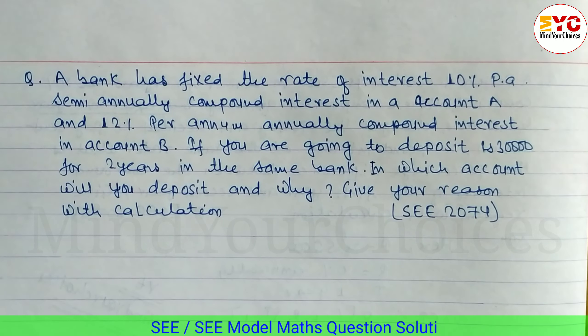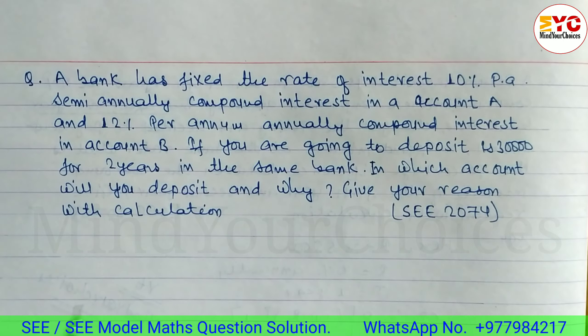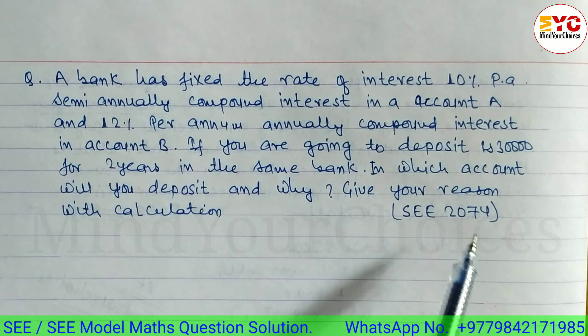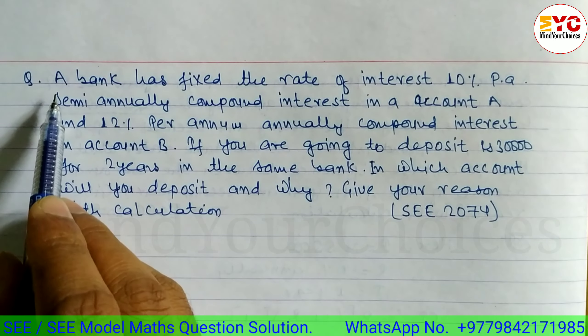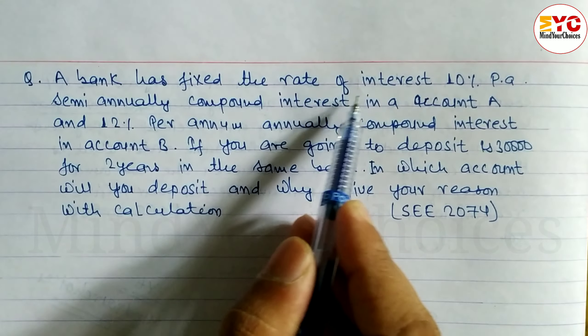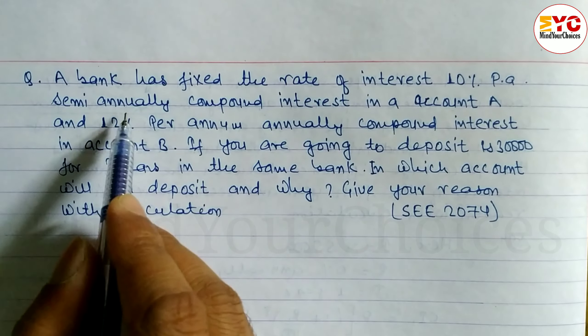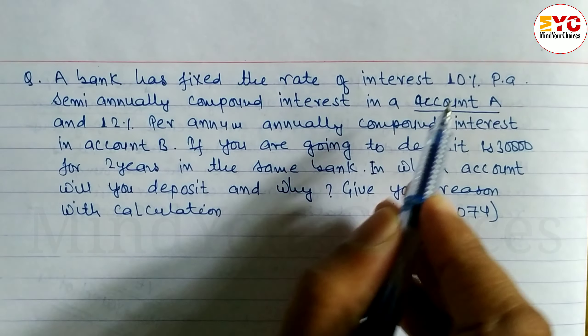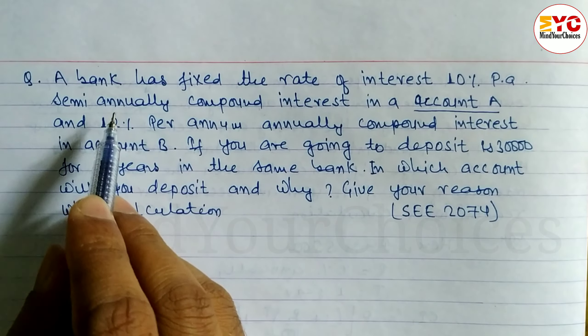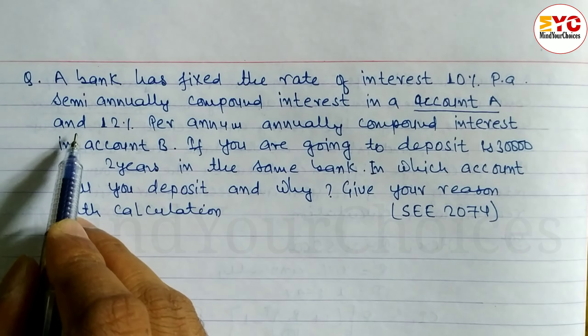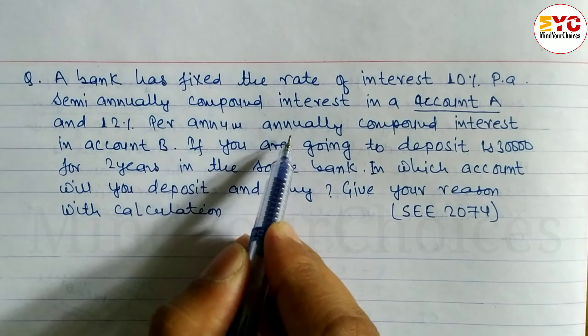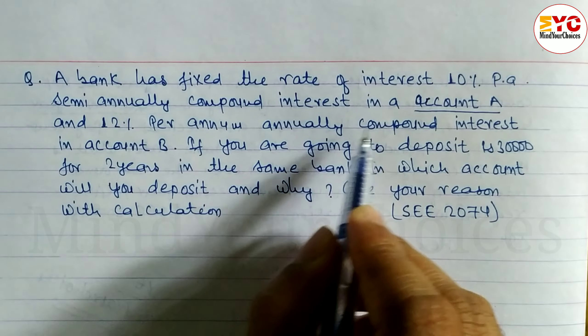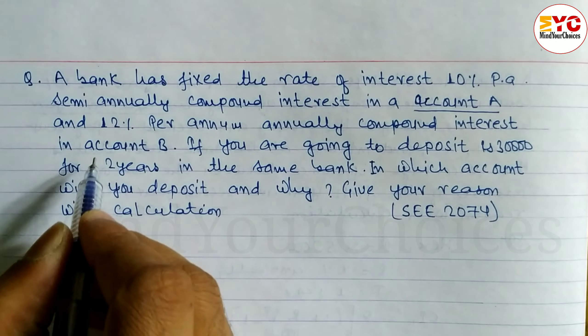In class 10 compound interest, this is a repeated model question from SE 2074. A bank has fixed the rate of interest 10% semi-annually compound interest in account A.